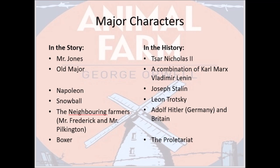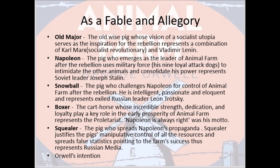Since Animal Farm is an allegorical account, there are direct parallels between historical figures and novel characters. Mr. Jones represents Tsar Nicholas II; Old Major is a combination of Karl Marx and Vladimir Lenin; Napoleon represents Joseph Stalin; Snowball represents Leon Trotsky; the neighboring farmers Mr. Frederick and Mr. Pilkington basically refer to Germany's and Britain's role in the Russian Revolution; while Boxer the cart horse represents the proletariat, the working class.